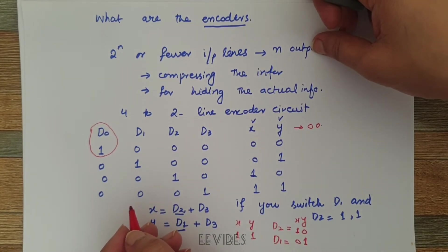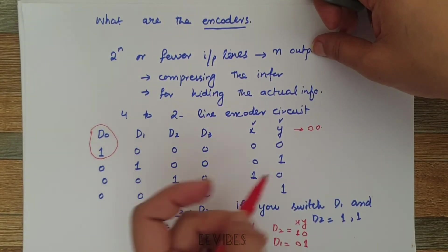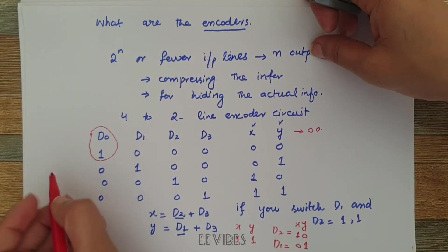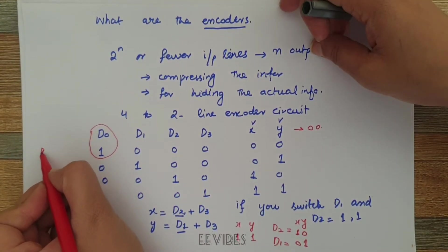In order to overcome these two problems we will use a priority encoder circuit.